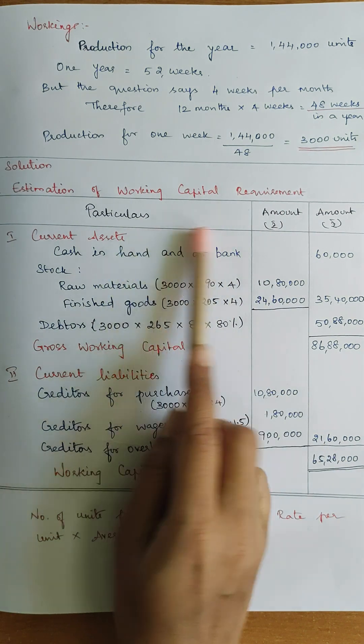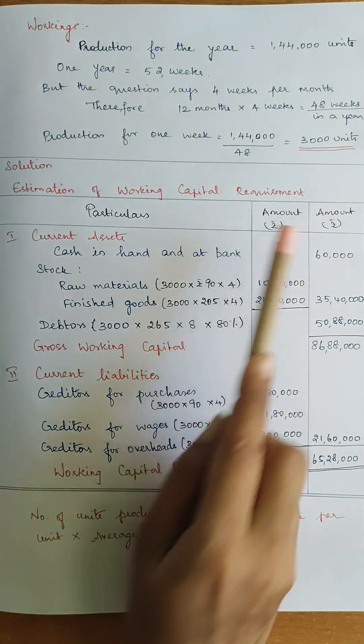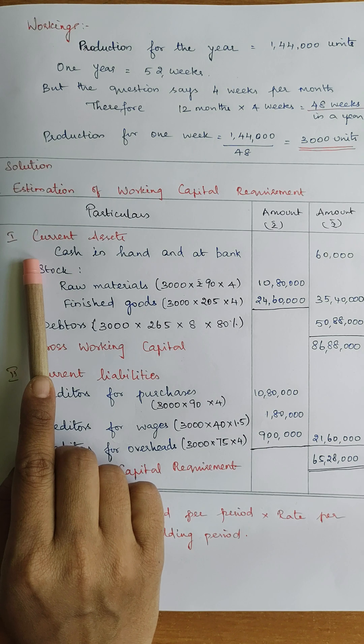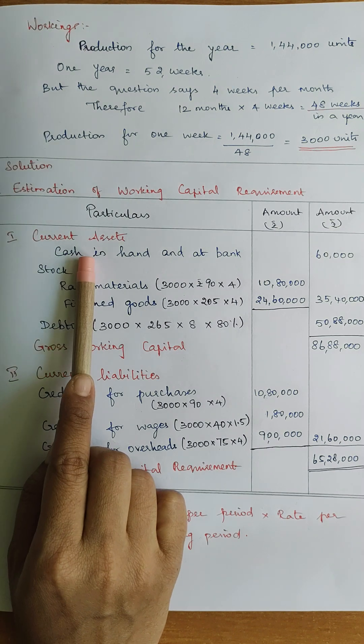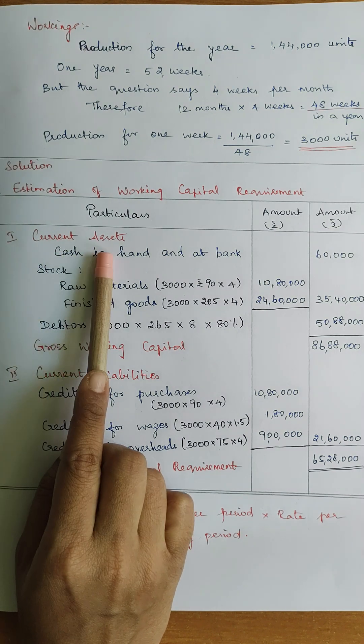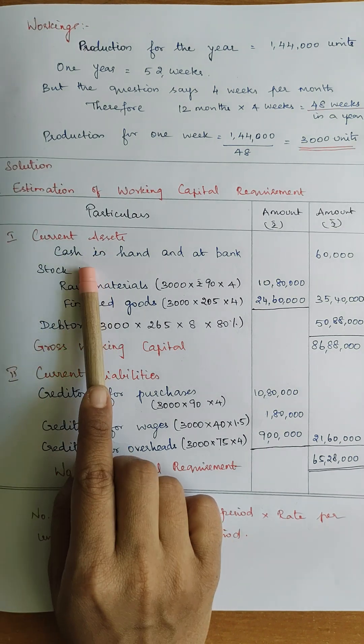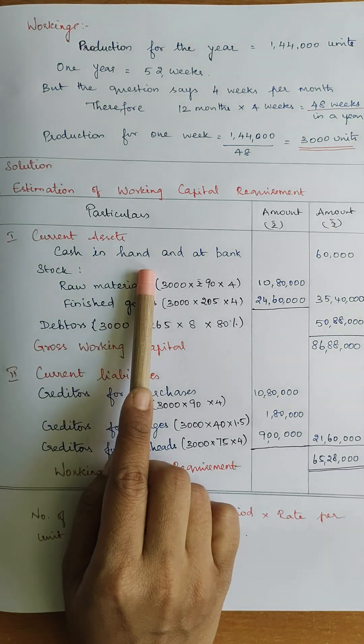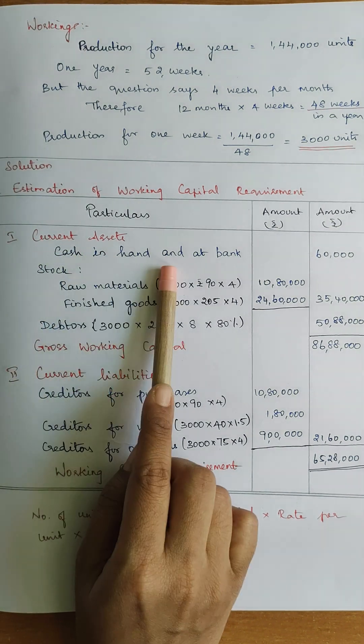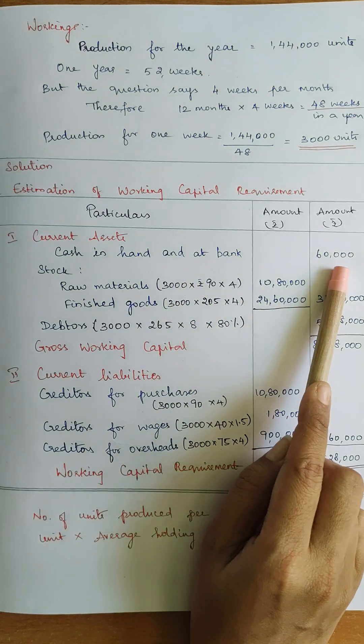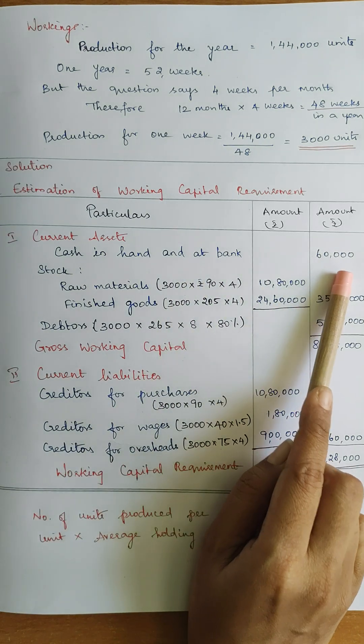Heading: Estimation of Working Capital Requirement. Open columns: Particulars and Amount. First, Roman Number I: Current Assets. Minimum cash available — Cash in Hand and Cash at Bank: 60,000 rupees as given in the question.